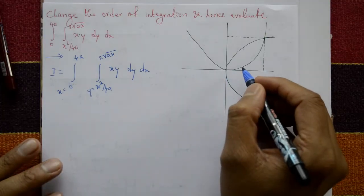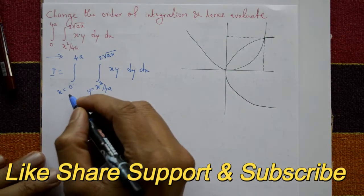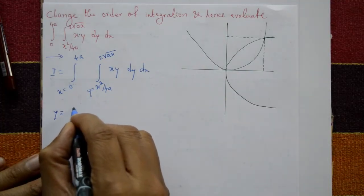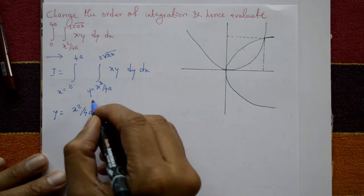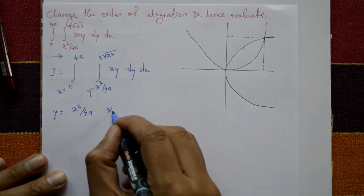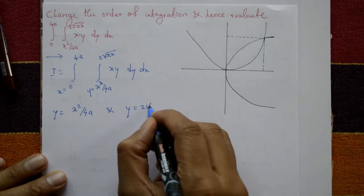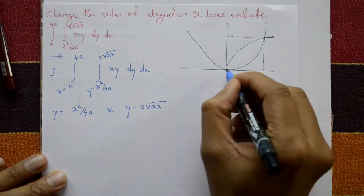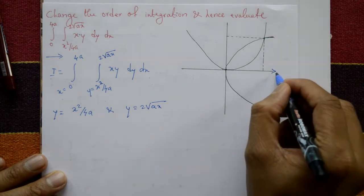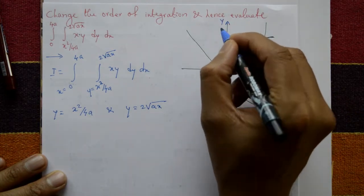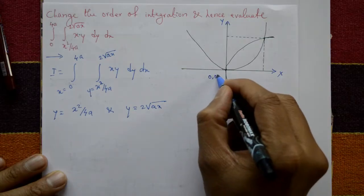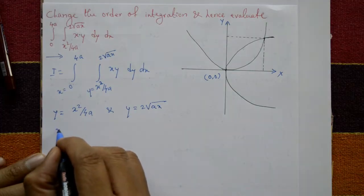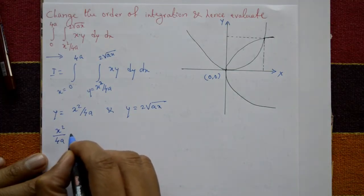x ranges from 0 to 4a. One curve is y equals x squared by 4a, which is a parabola equation, and the other is y equals 2 times square root of ax. Now find the point of intersection. This is the x-axis, this is the y-axis, and this is the origin (0, 0).